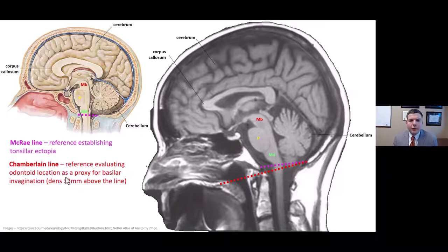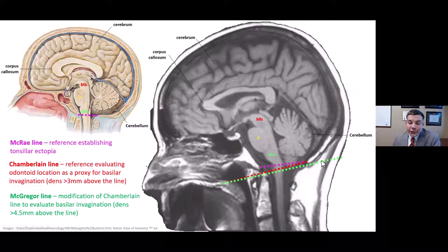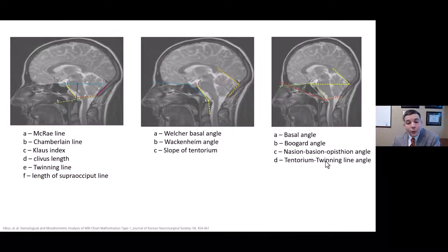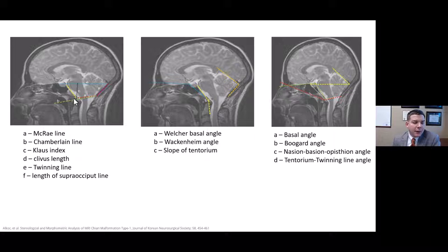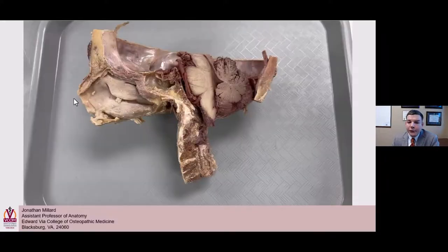McGregor's line is a modified Chamberlain's line to assess basilar invagination when the opisthion is not visible. There are many other measurements and angles between landmarks that researchers have explored to find which are salient and different in Chiari patients — providing power to clinical decisions and prognosis. This is an area Conquer Chiari has been heavily involved in.